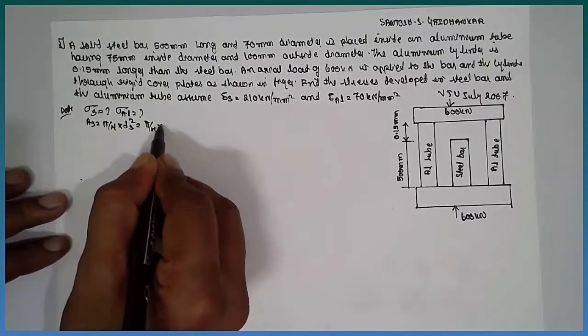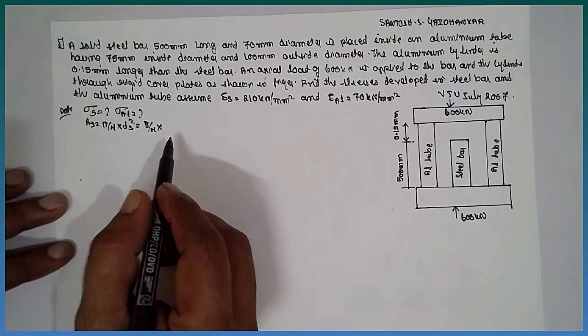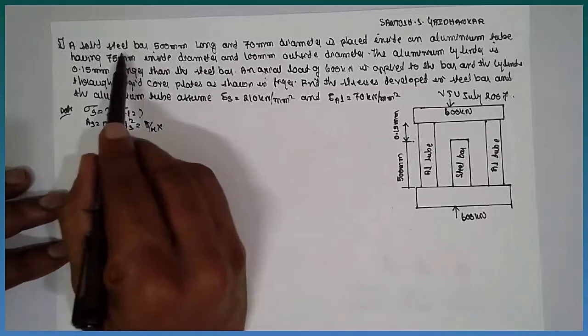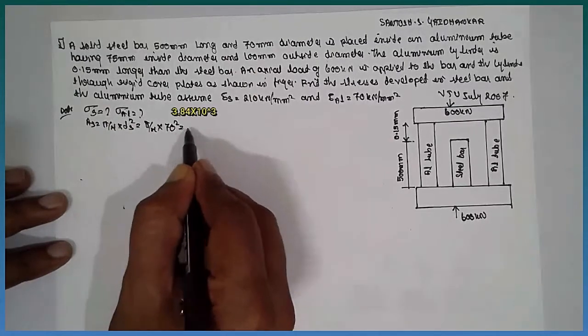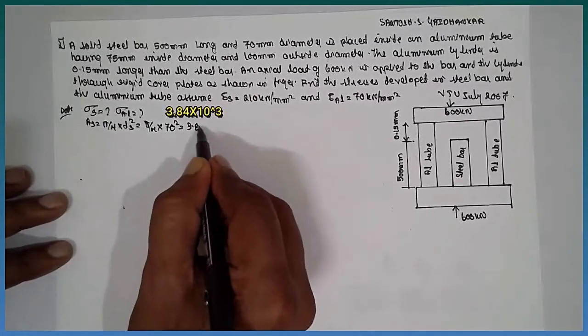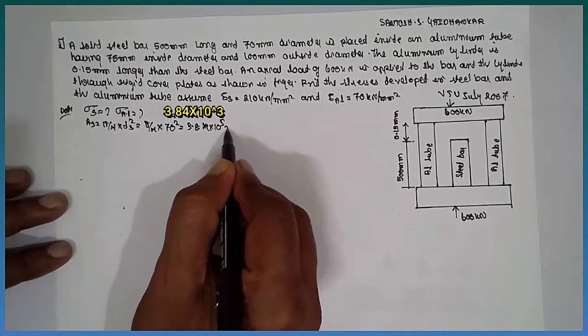Pi by 4, what is ds? Diameter of the steel, 70 mm they have given, 70 square equals 3.84 into 10 raised to 5 mm square.